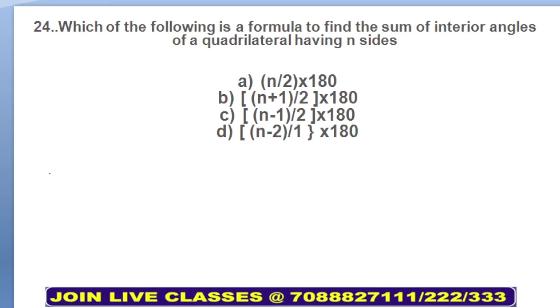Next, moving on to question number 24. Which of the following is the formula to find the sum of interior angles of a quadrilateral having n sides? The formula is sum = (n - 2) × 180. Your formula is (n - 2) × 180, or (n - 2)/1 × 180. Option D will be your answer.